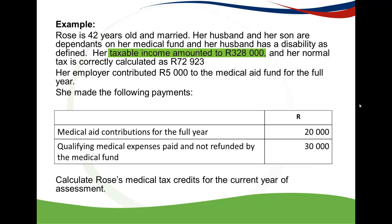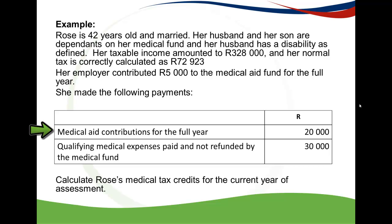Her taxable income is 328,000 Rand and her normal tax is correctly calculated as 72,923 — so the normal tax calculation has already been done for us. Her employer contributed 5,000 Rand to the medical aid fund for the full year, and she also made her own medical aid contributions plus qualifying medical expenses paid and not refunded by the medical aid. We are asked to calculate her medical tax credits for the current year of assessment.